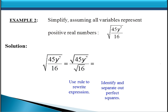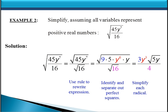While 45y to the 7th is not a perfect square, we can factor out the perfect square factors. 9 is a perfect square factor of 45, so we split 45 into 9 times 5. And y to the 6th is the biggest perfect square factor of y to the 7th, so we split that into y to the 6th times y. We now have three perfect squares: 9, y to the 6th, and 16. Taking their square roots separately, we get 3y cubed times the square root of 5y, all over 4 — since the square root of 9 is 3, the square root of y to the 6th is y cubed, and the square root of 16 is 4.